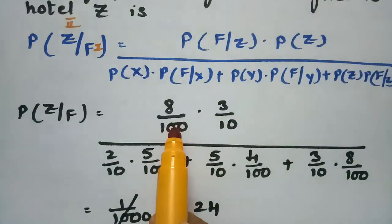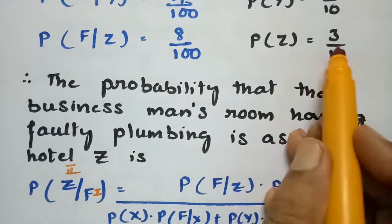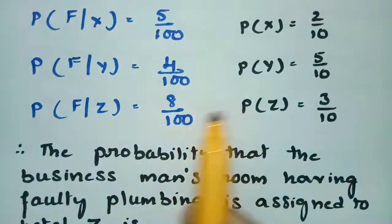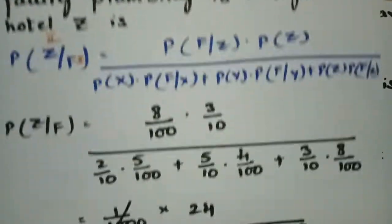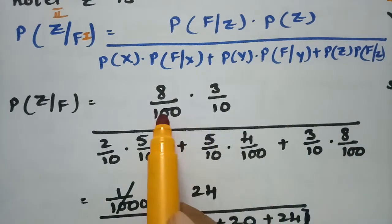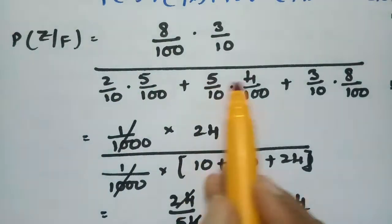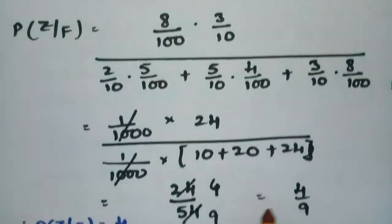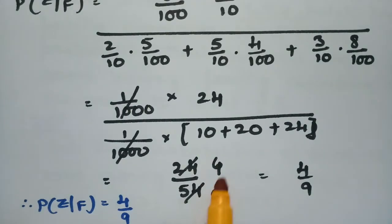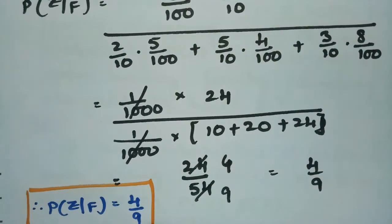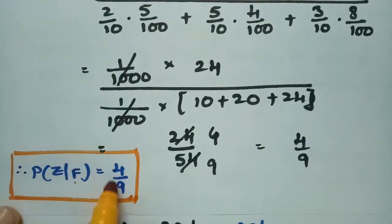Substituting all six values: the numerator is P(F|Z) × P(Z) = 8 by 100 × 3 by 10. The denominator is (5 by 100 × 2 by 10) + (4 by 100 × 5 by 10) + (8 by 100 × 3 by 10). Taking 1000 as common from numerator and denominator and cancelling, this gives 10, 20, and 24. So the result is 24 by 54, which simplifies by dividing by 6 to give 4 by 9.